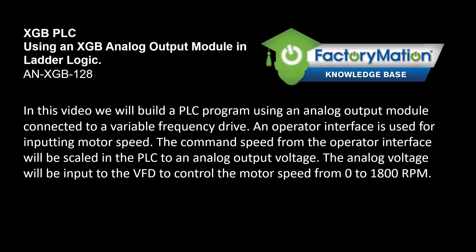In this video we will build a PLC program using an analog output module connected to a variable frequency drive. An operator interface is used for inputting motor speed. The command speed from the operator interface will be scaled in the PLC to an analog output voltage. The analog voltage will be input to the VFD to control the motor speed from 0 to 1800 RPM.